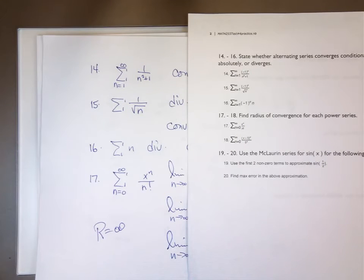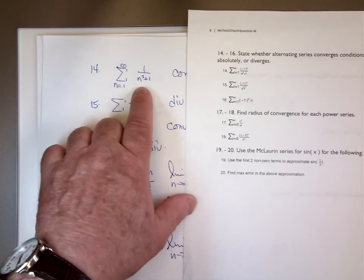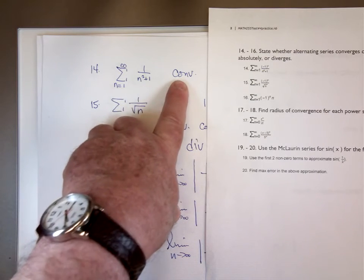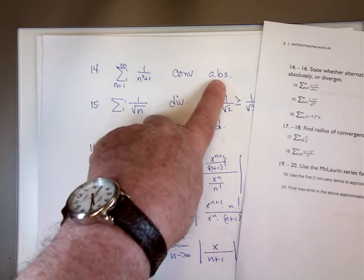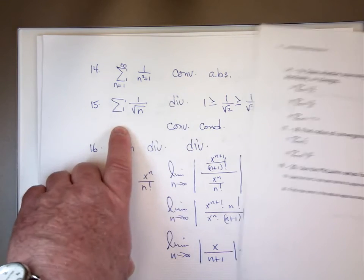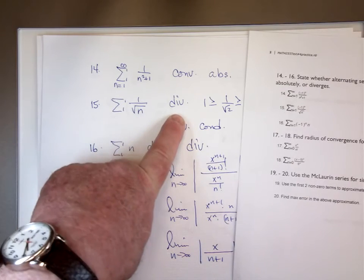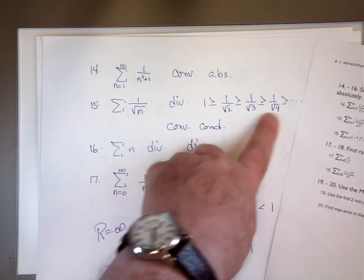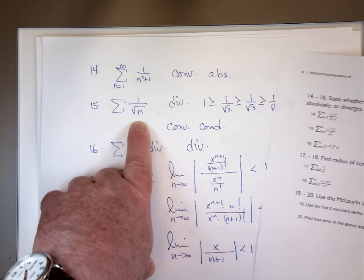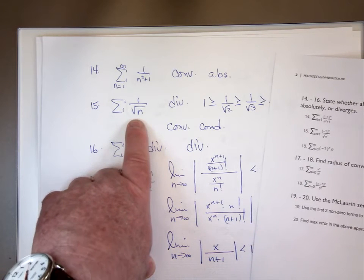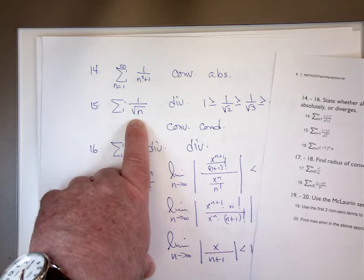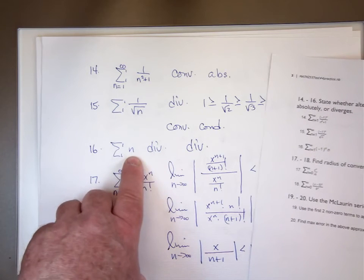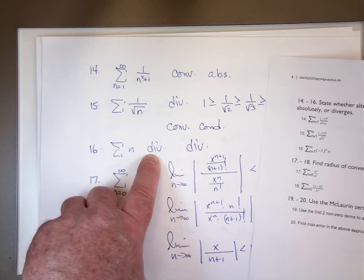Number 14 is an alternating series. Test the positive series first. The positive series 1 over n squared plus 1 converges — difference in degrees is 2. Since the positive series converges, the alternating series converges absolutely. Number 15: the positive series diverges — difference in degrees is only one-half — but the terms are decreasing and the nth term is going to 0, so the alternating series converges. Therefore, it converges conditionally. Number 16: the nth term is not going to go to 0, causing the series to diverge.